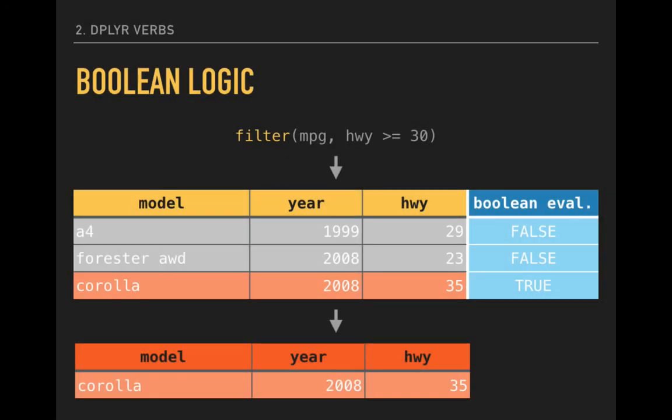When we instruct R to filter based on a particular expression, in this case highway fuel efficiency, we are really asking the computer to look at each observation and compare it to the given value, in this case 30. For each observation, the computer compares the given value to the observed value and decides if the expression is true or false. I've added the evaluation results in blue to an example data frame. Since the Audi A4's miles per gallon is 29, the expression evaluates as false. Same for my Subaru Forester, whose 23 miles per gallon also evaluate as false since they are under 30.